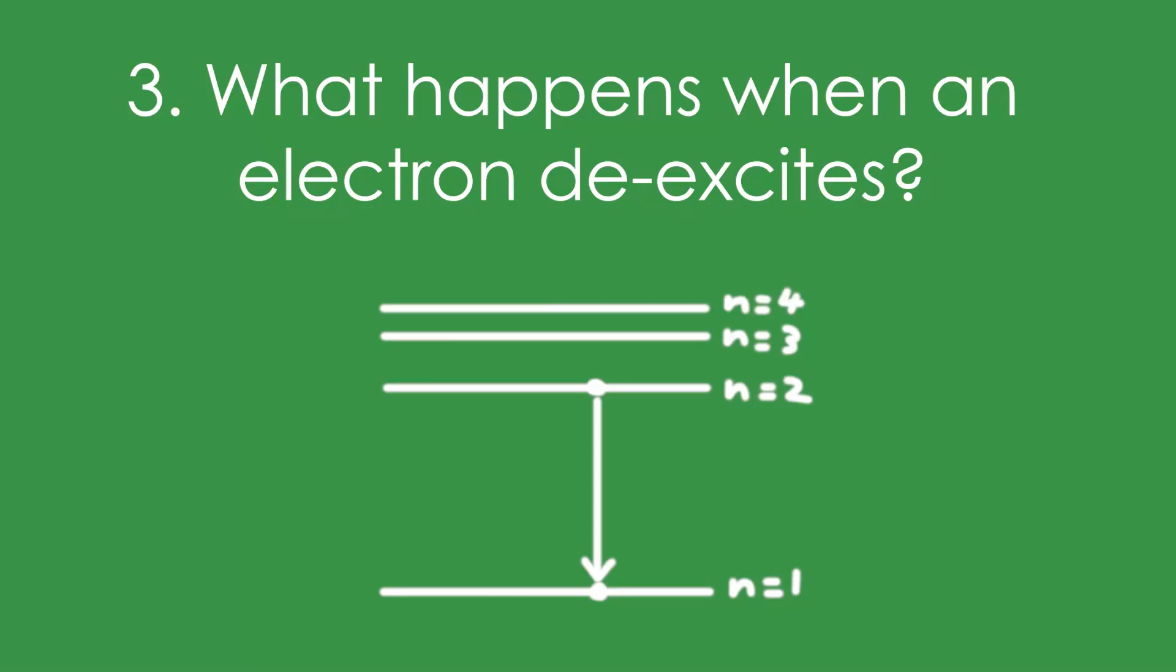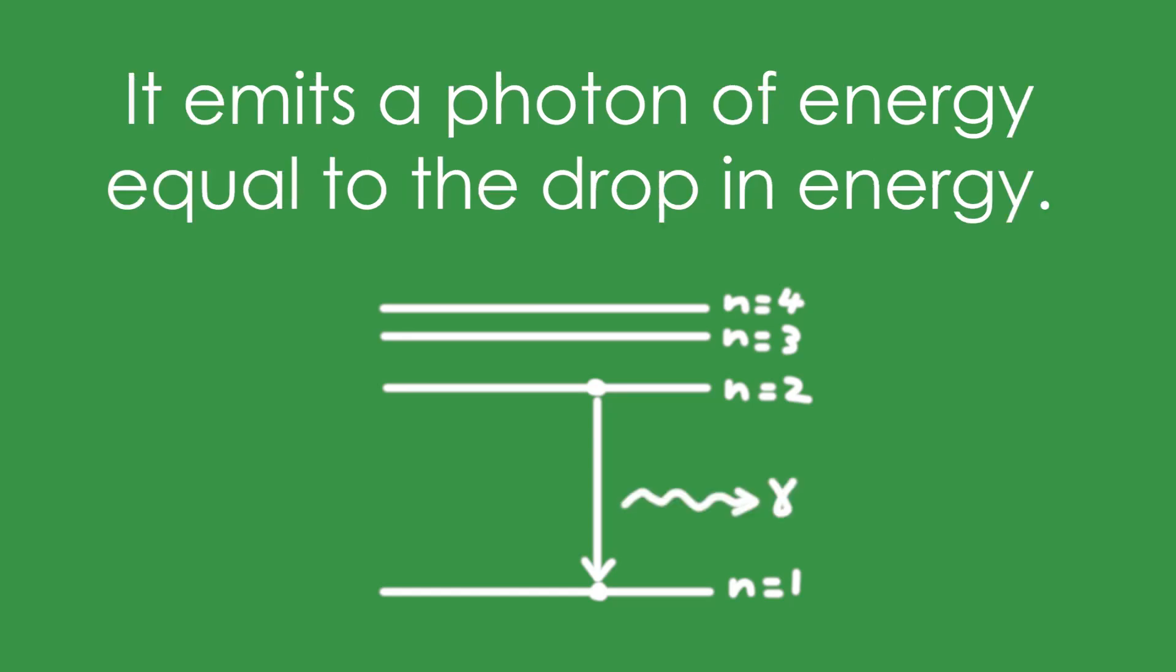Three, what happens when an electron de-excites? It emits a photon of energy equal to the drop in energy.